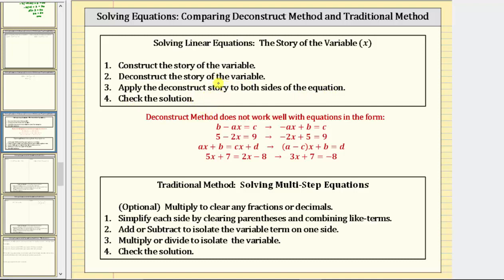However, this method does have issues when we have equations in the form shown here, where if the variable term is not first, we would need to rewrite the equation so the variable term is first as an equivalent equation. There are also issues when there are variable terms on both sides of the equation — we would again have to rewrite the equation as an equivalent equation where the variable term is the first term on the left or right side. For this reason, it might be helpful at this point to transition to the more traditional method of solving linear equations.